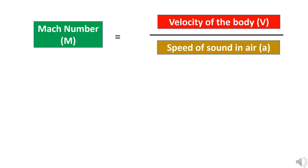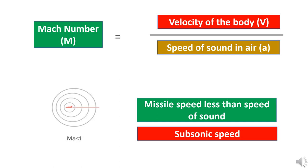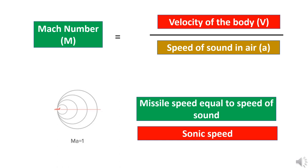To understand what is hypersonics we need to understand what is Mach number. Sound travels at different speeds in different mediums. If the velocity of missile is less than the speed of sound in air then we call it subsonic speeds or Mach less than one. If missile speed equals the speed of sound then Mach number equals one or sonic speed.